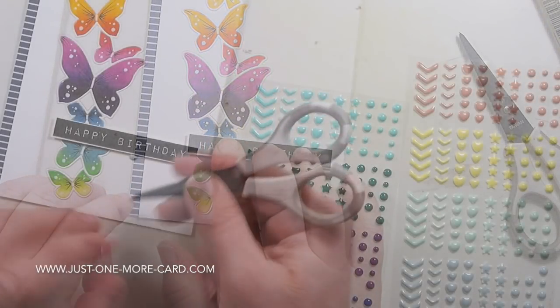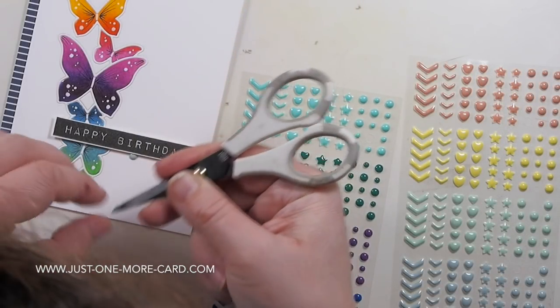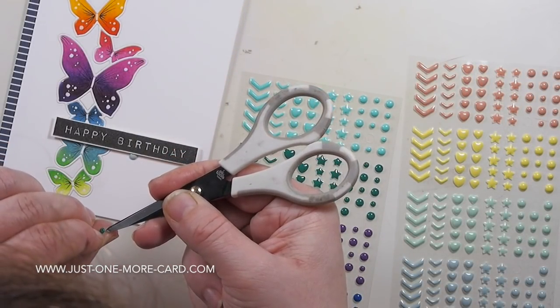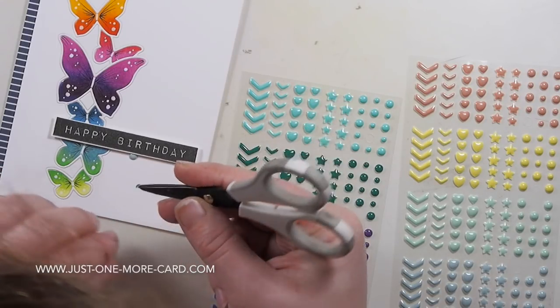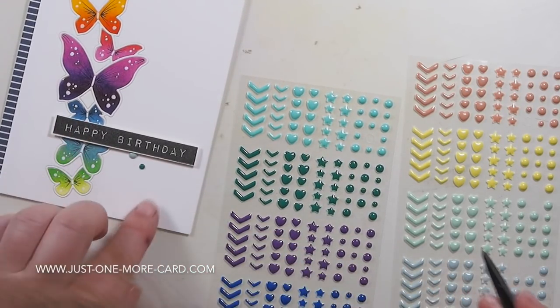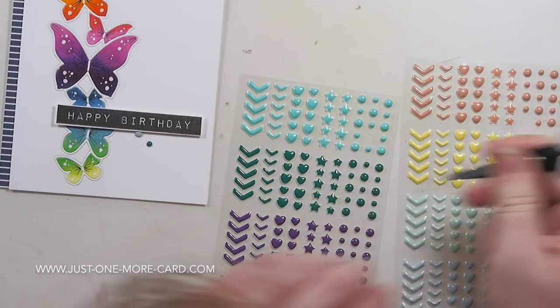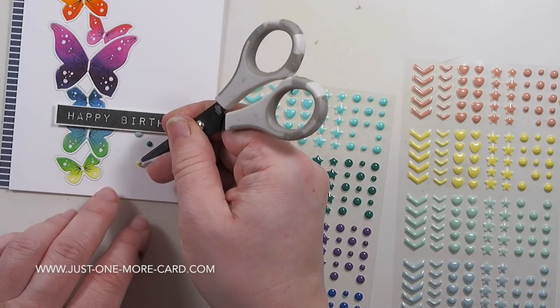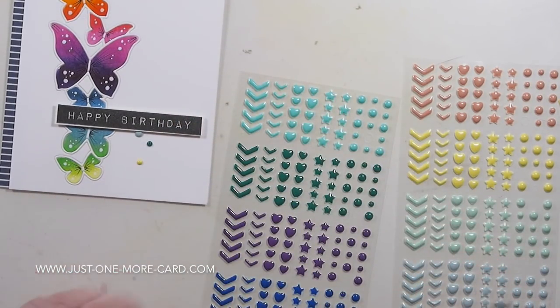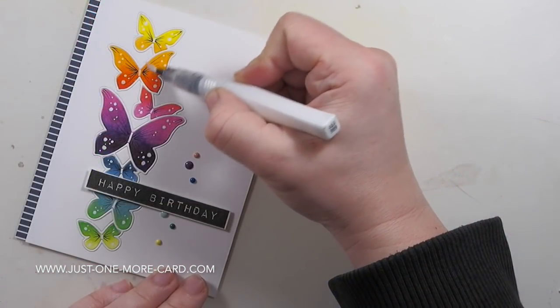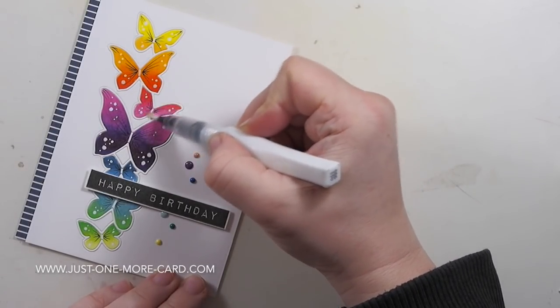I discovered that I had some enamel accents from Creator Smile Stamps, which is a German company, and their colors just perfectly match my rainbow butterflies. So I grabbed those enamel accents and I'm just adhering them, just three on the bottom and three on the top, just for some additional interest.